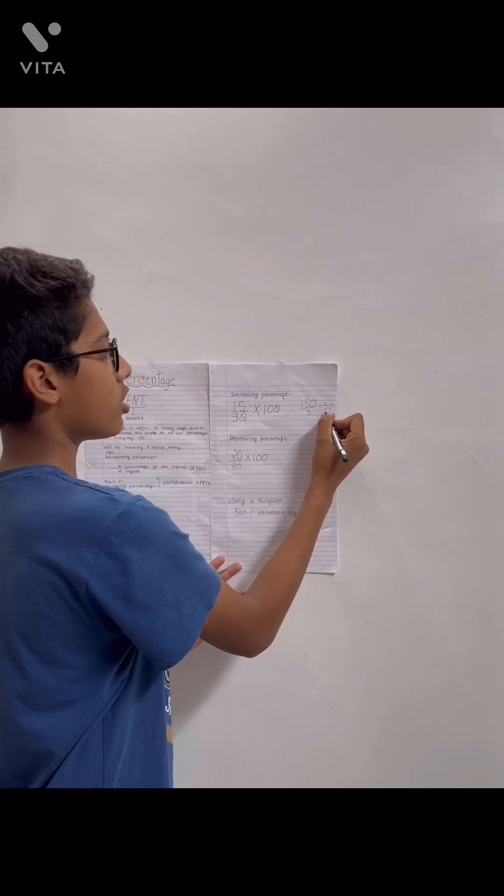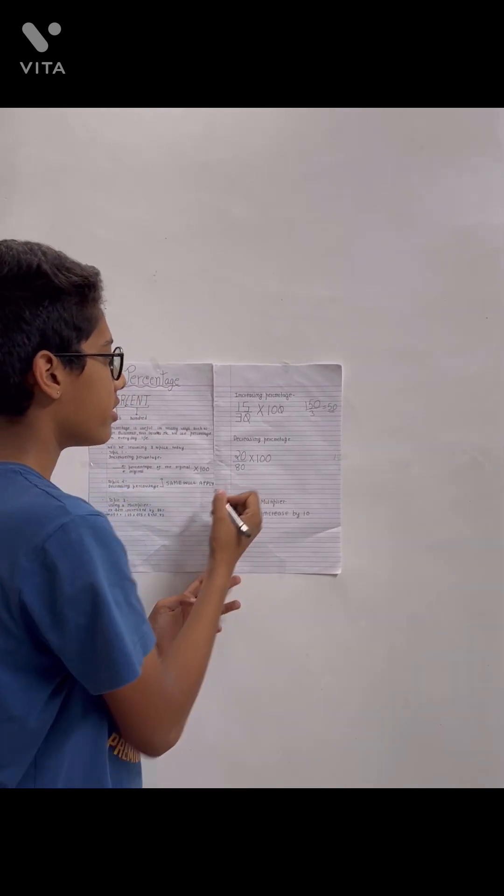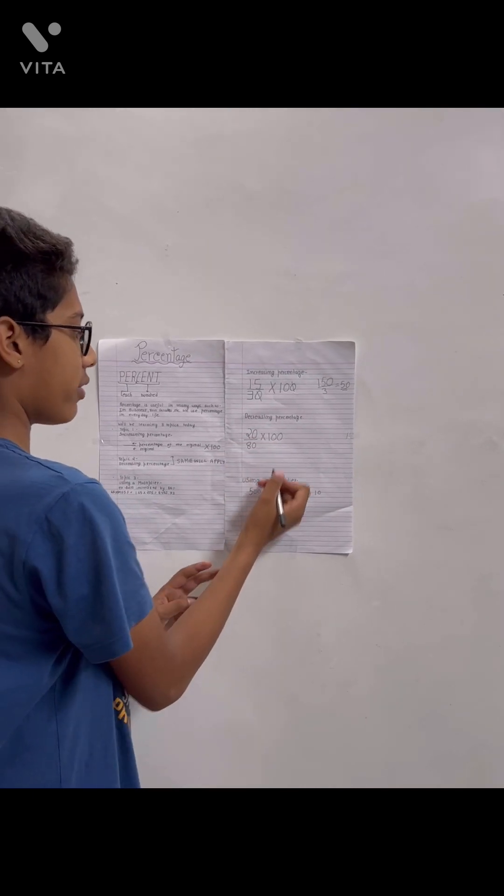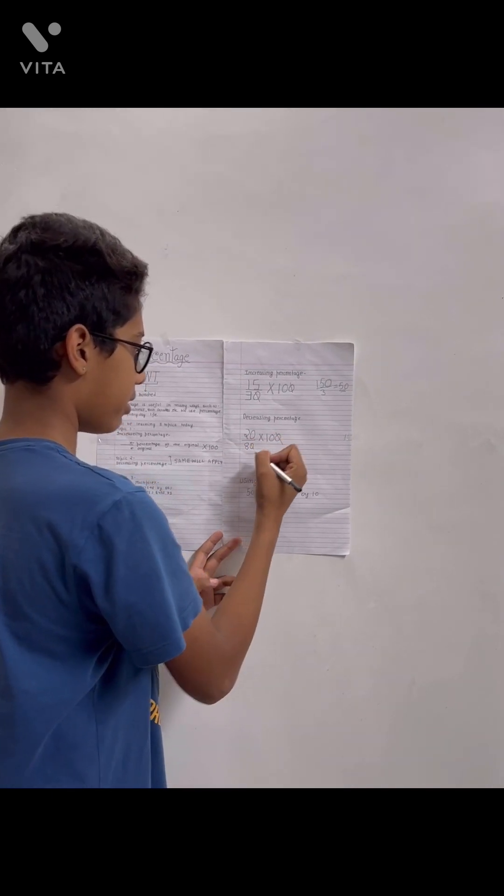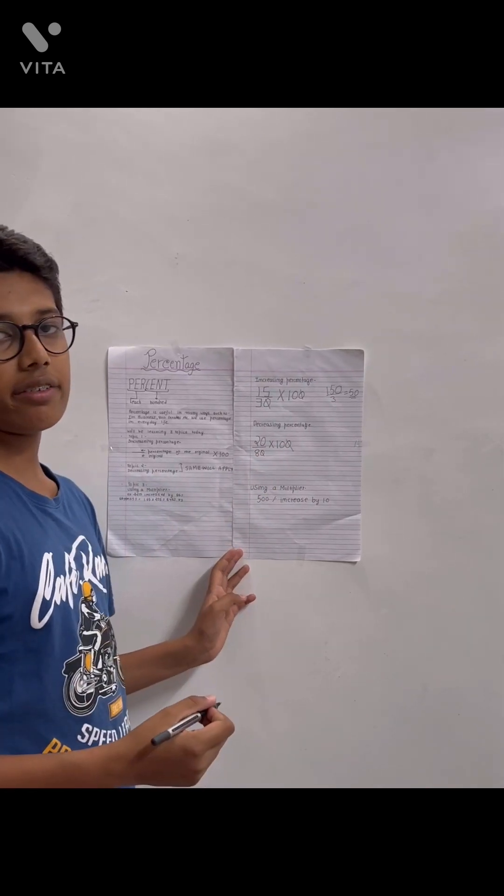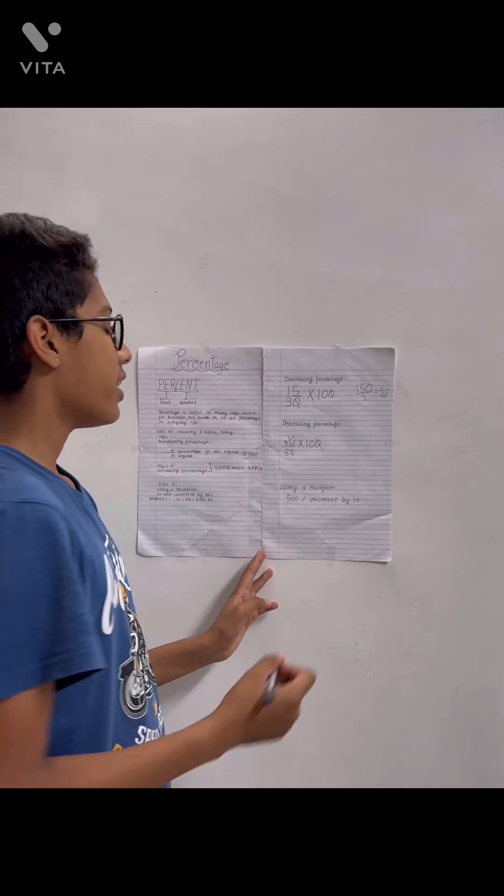Okay, then decreasing percentage: 20 upon 80 into 100. Same zeros will be cut. 20 into 10 is 200, 200 divided by 8 is 25.